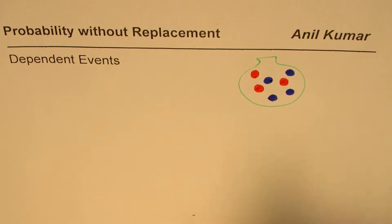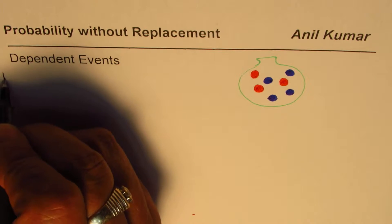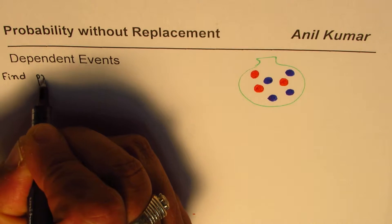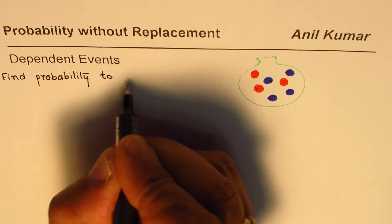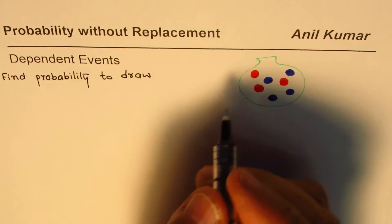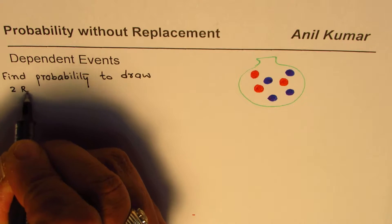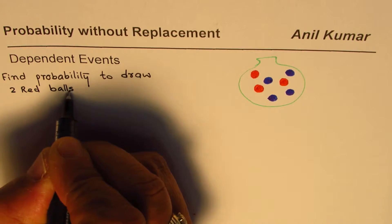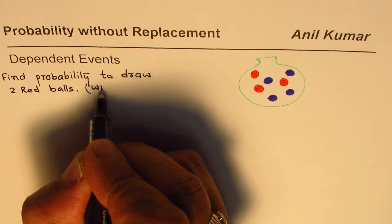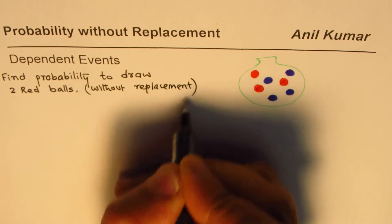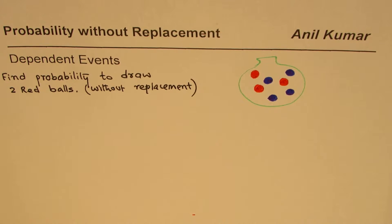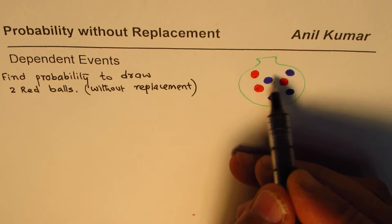We need to find the probability of drawing two red balls without replacement. Let's first understand what 'without replacement' means. Let's say I randomly pick up a ball from the bag.